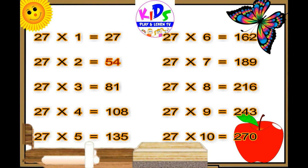27 sevens are 189. 27 eights are 216. 27 nines are 243. 27 tens are 216.